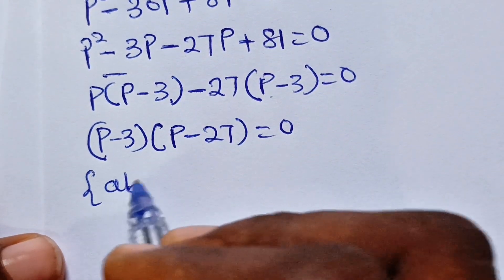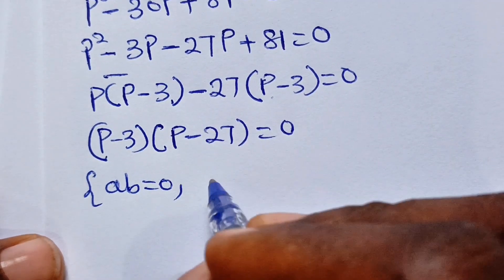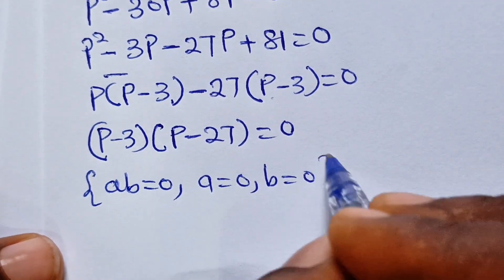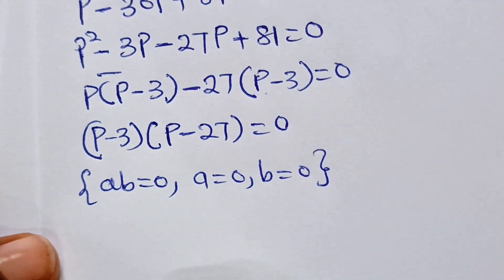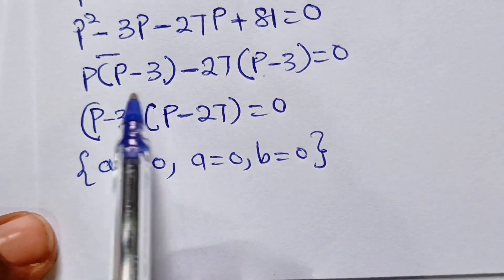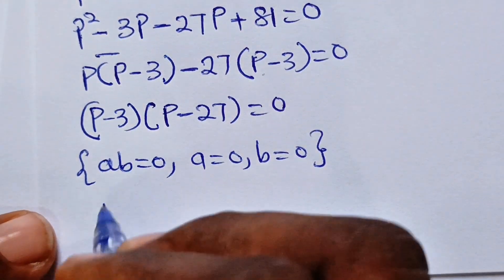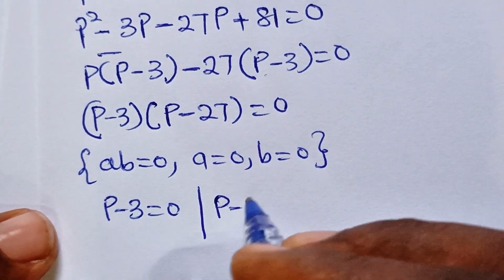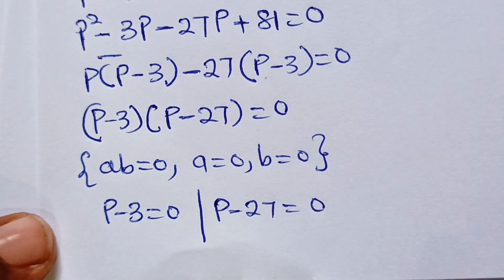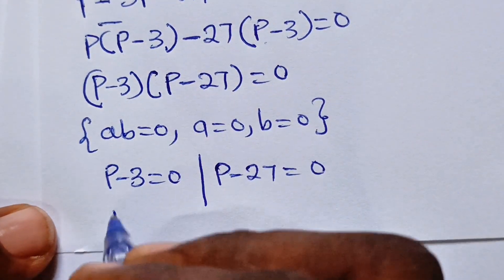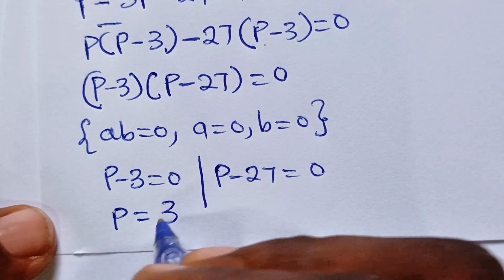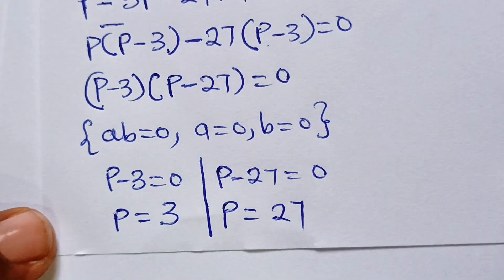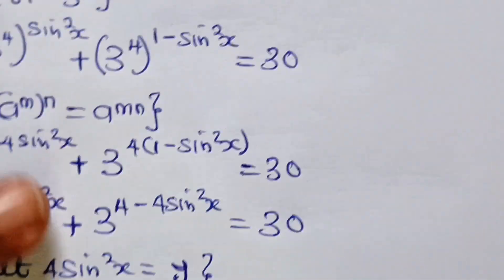Remember that if ab = 0, it means either a = 0, or b = 0, or both. So p = 3 and p = 27 are our solutions. But we are not asked to find p — we are asked to find x, so let's continue.